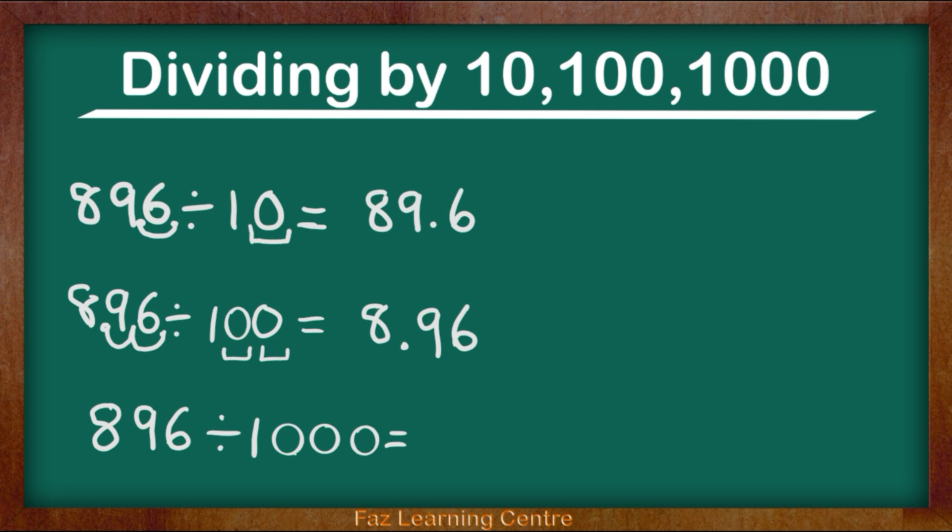So let's see what we need to do. First thing we need to do is we need to see how many zeros are in 1,000: 1, 2, 3. So we are moving 3 decimal points to the left. So here is my decimal point. It is visible.